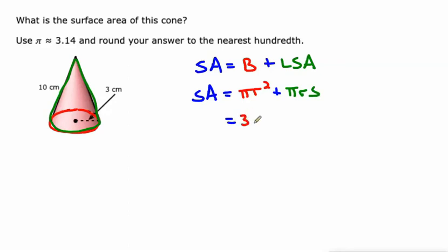It's just plugging values in. 3.14 for pi, the radius is 3. Again, 3.14 for pi. The radius is 3. And the slant height is 10.